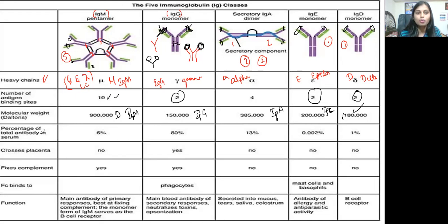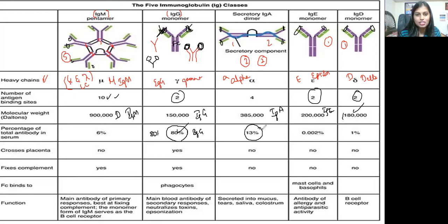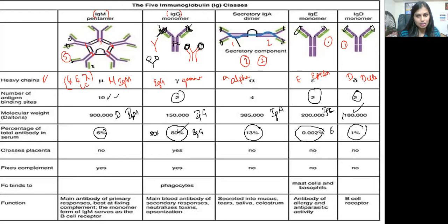Now the percentage of total antibody in serum. IgG has the highest concentration at 80% — it is the most abundant antibody in the serum. After IgG, IgA is 13%, which is called the secretory antibody, present in tears, mucus, and so on. Next is IgM at 6%, then IgD at 1%, and finally IgE at 0.002%. IgE is present in very low concentration because it is mainly involved during allergic reactions.